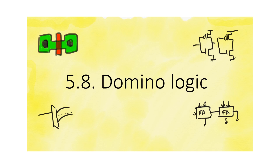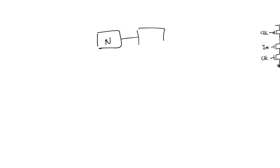Domino Logic is a method of using dynamic gates that allows us to get over the cascading effects without having to use pull-up networks. The problem with using NP-Logic is that we have to use P-stagers, and the P-stagers use PMOS transistors.